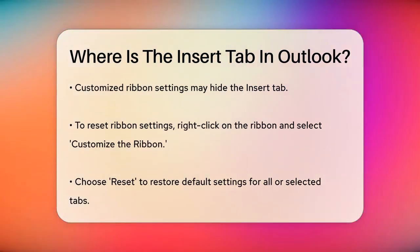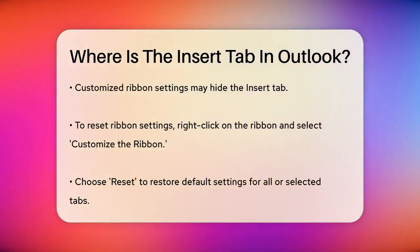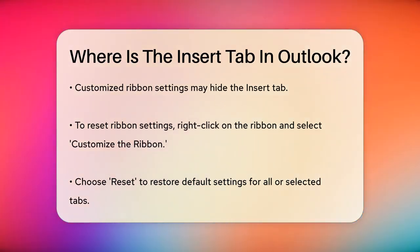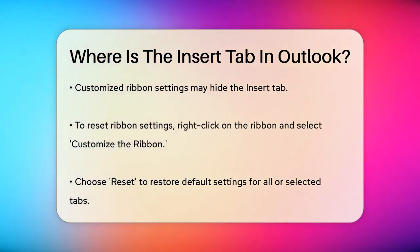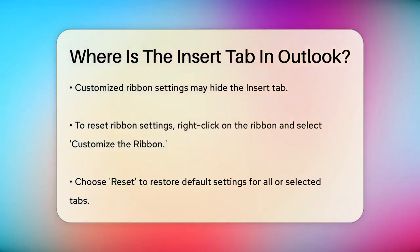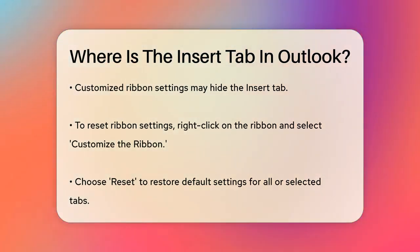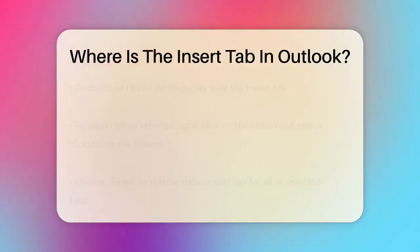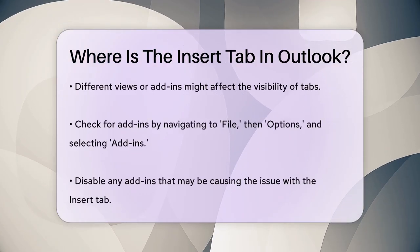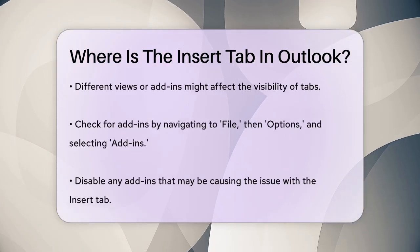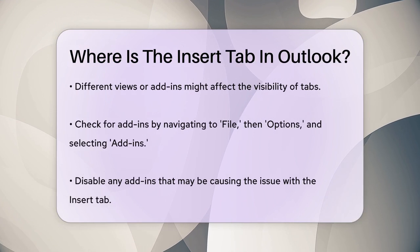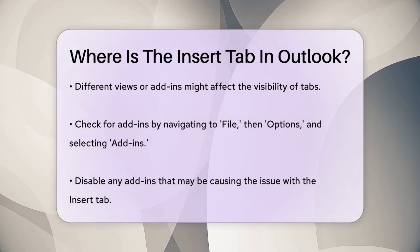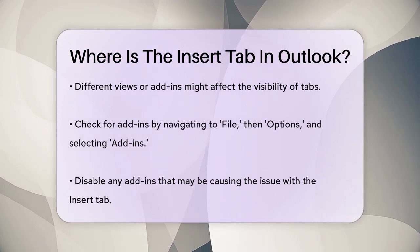Sometimes the issue might be due to customized ribbon settings. If you've customized the ribbon, it could hide certain tabs. To reset the ribbon to its default settings, right-click on the ribbon and then click Reset at the bottom right. You can choose to reset all customizations or just the selected ribbon tab.